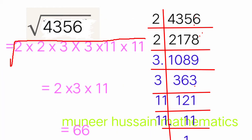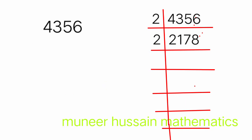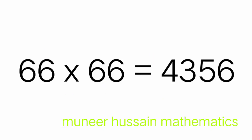So we have 4356 = 2² × 3² × 11². When we take the square root of square numbers, the square and square root both disappear. So we have 2 × 3 × 11, and our answer is 66. We can verify this by multiplying 66 × 66, which gives 4356.